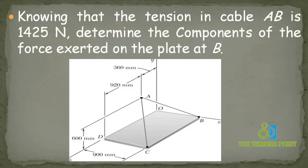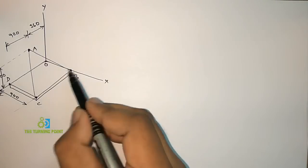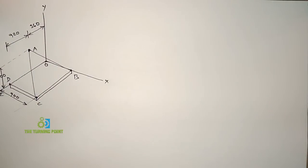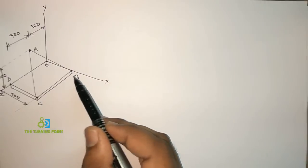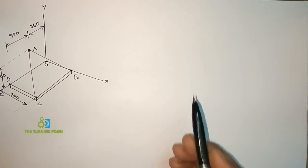Knowing that the tension in cable AB is 1425N, determine the components of the force exerted on the plate at B. Here, a figure is given and it is asked to calculate the components of force at point B. So we have to consider equilibrium of point B, because it is asked to calculate the components of force at B.